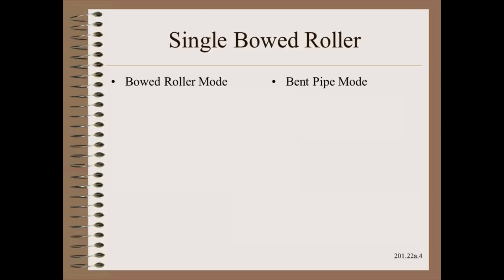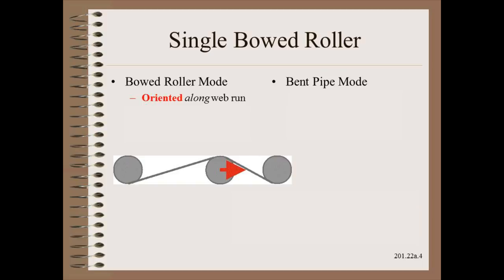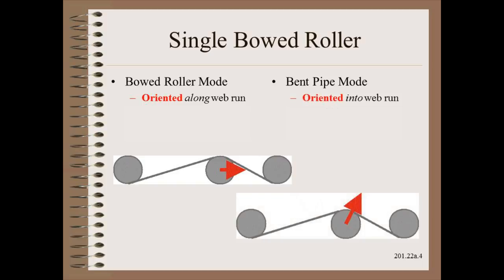In any case, the application, design details, and web handling principles are quite different. Perhaps the easiest way to tell which mode you are running is to see which bow orientation works best. Bow orientation can often be seen by the arrow on the end of the roller. In the bowed roller mode, the bow points approximately in the direction of web travel. In the bent pipe mode, the bow will be pointed into the web a bit more than that.